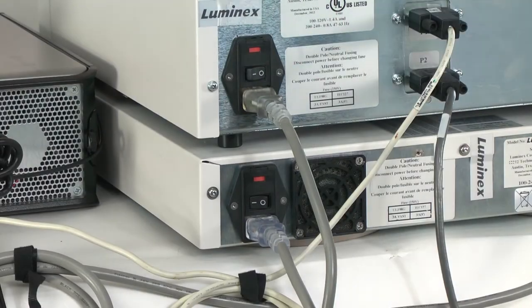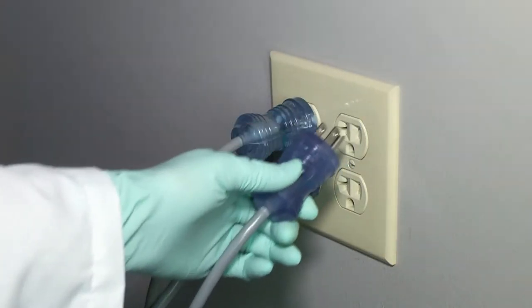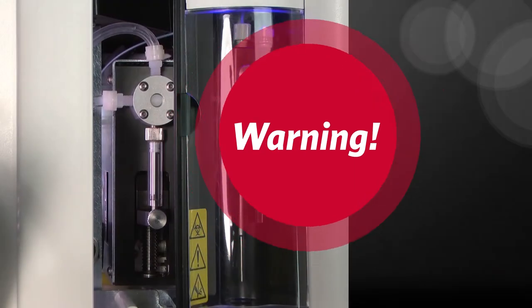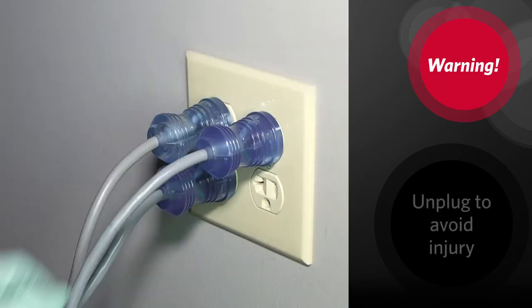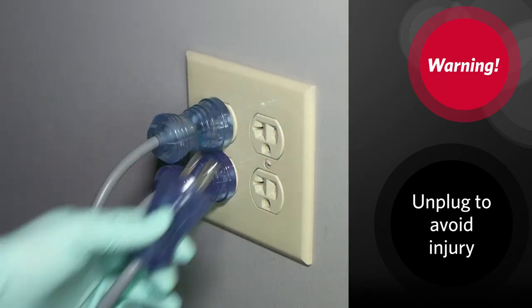Turn off the Luminex 200 instrument and unplug the power cord. Warning: the syringe arm does not deactivate while the seal is being changed. Unplugging is necessary to avoid injury.